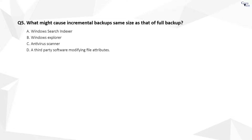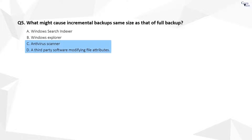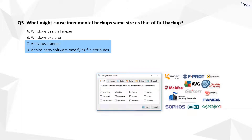Question 5. The correct answer is C and D. The third-party software or antivirus scanner installed on your system is modifying the files every time they are backed up. In this process, these files are picked up in the subsequent backups, increasing the size of incremental backups.